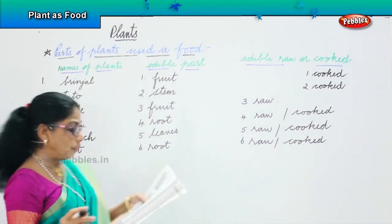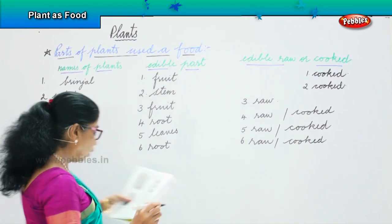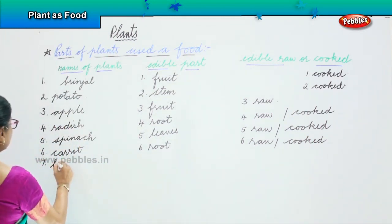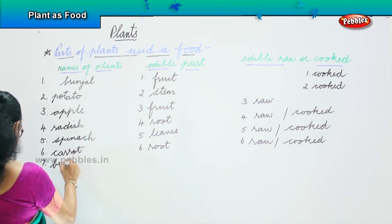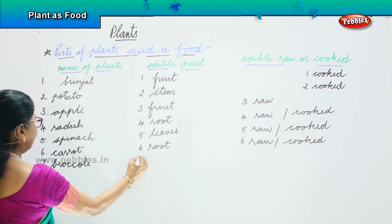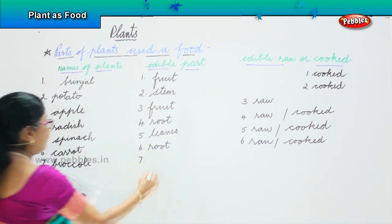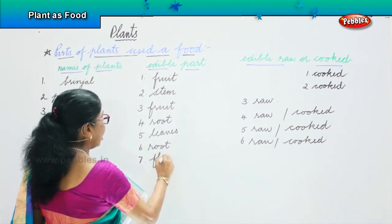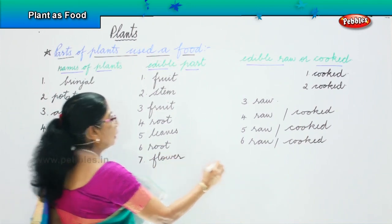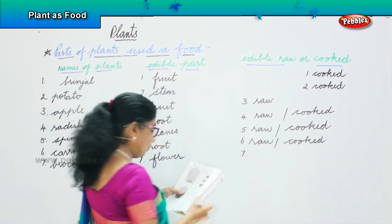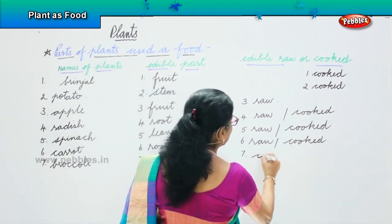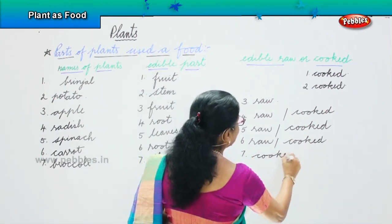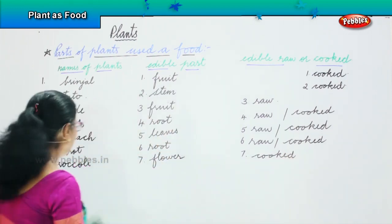Next, the food we are looking at is broccoli. What part of the plant is broccoli? It's a flower. How do you eat broccoli? Broccoli can be eaten cooked only. It can be cooked and eaten only.